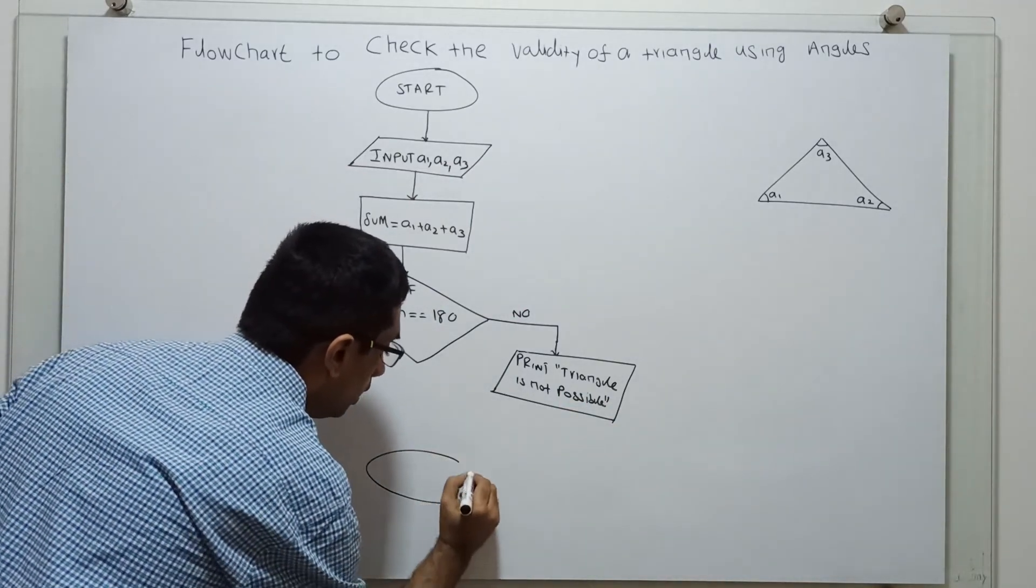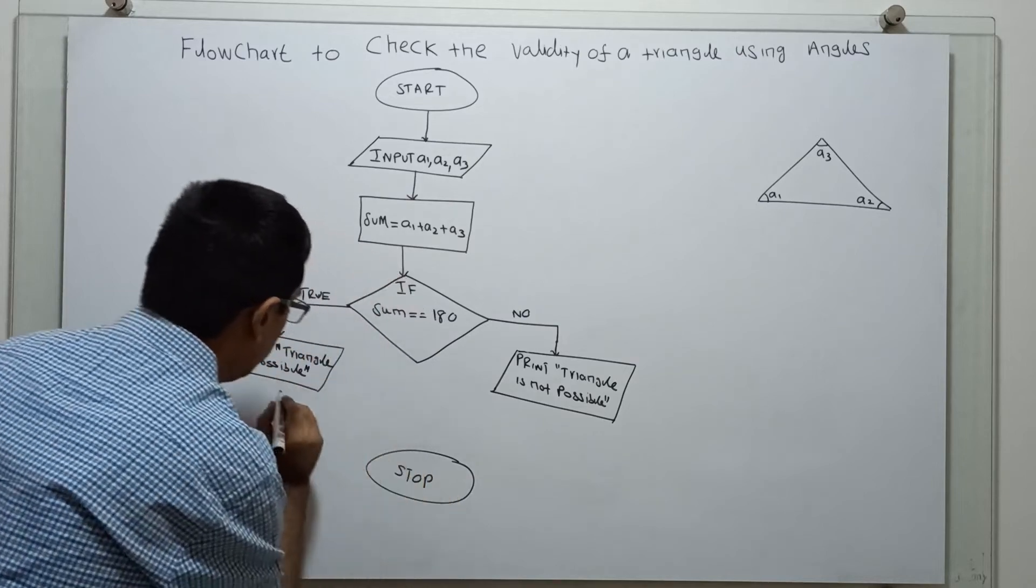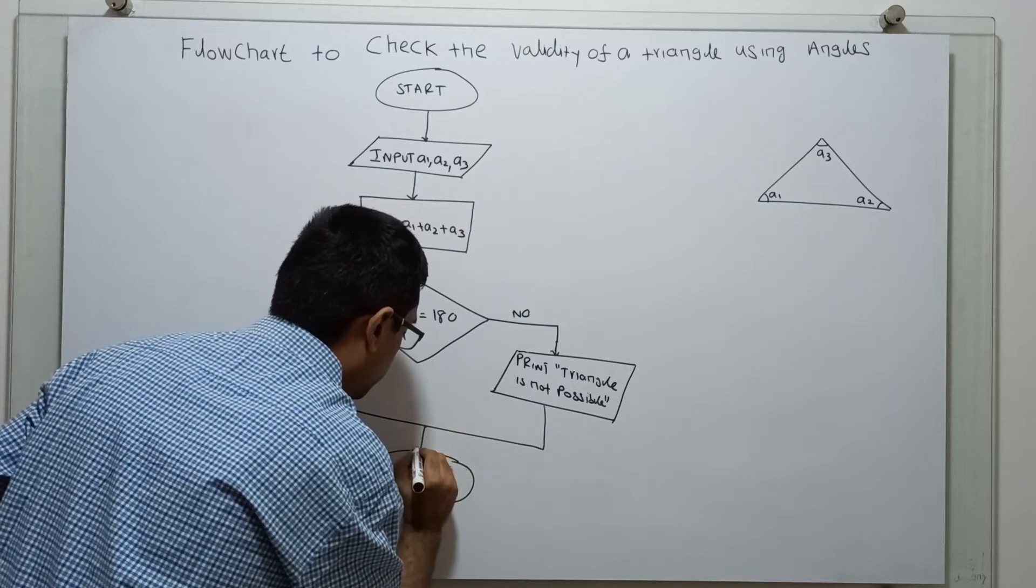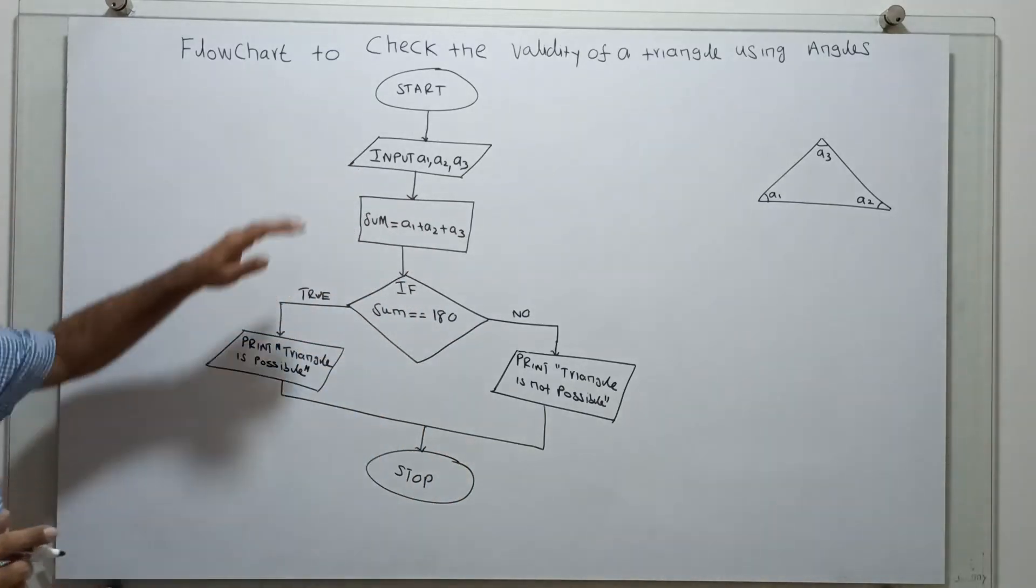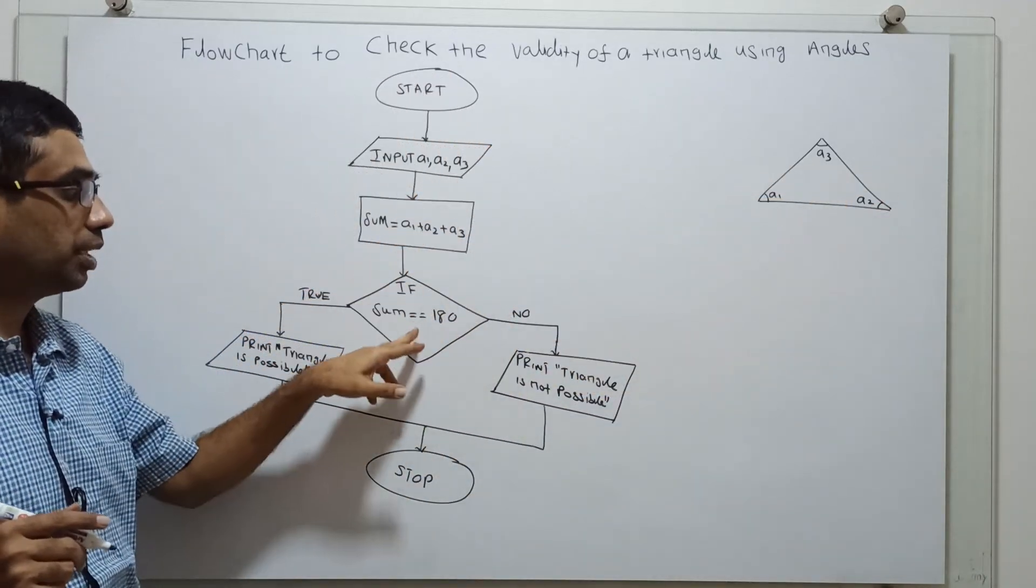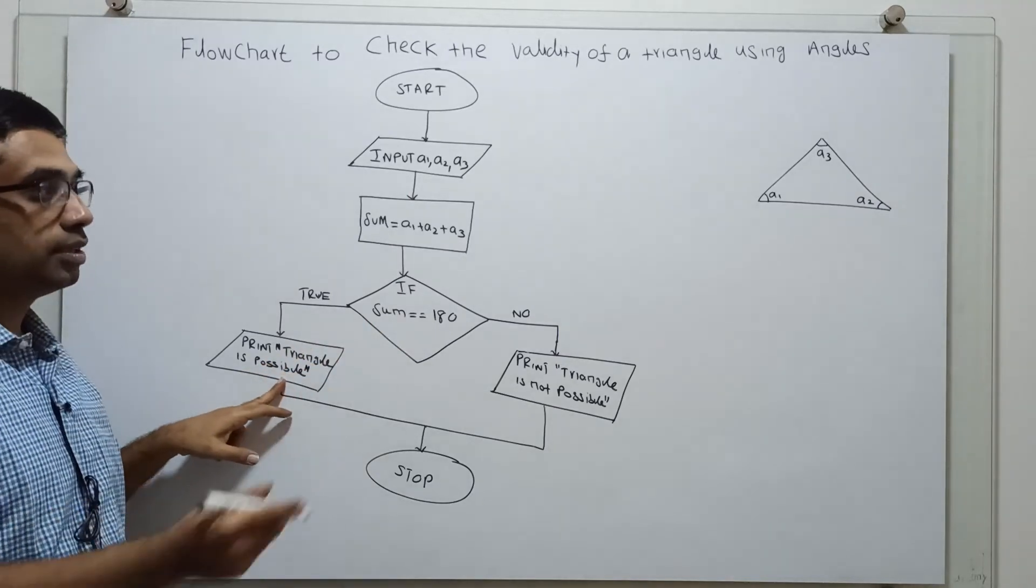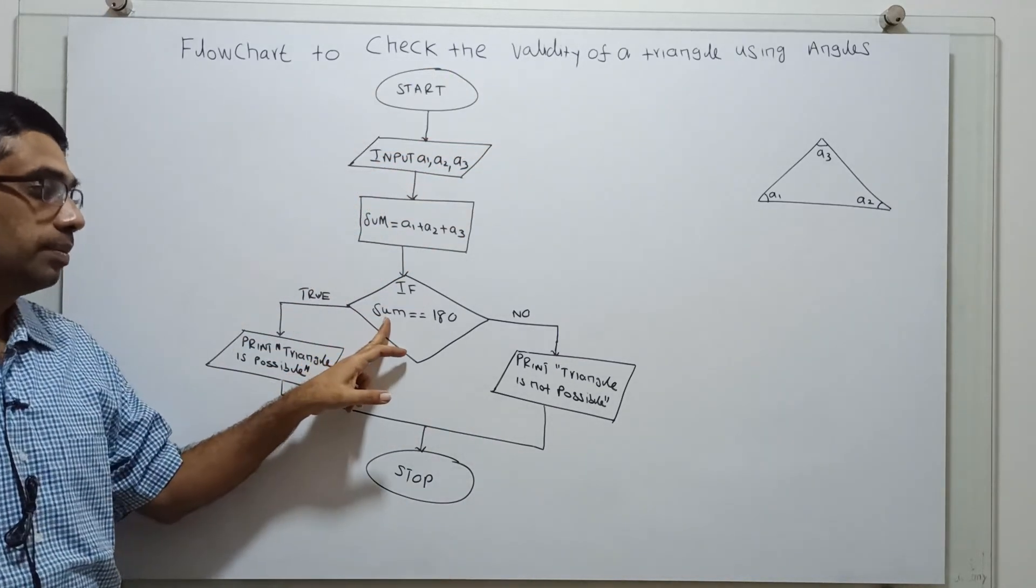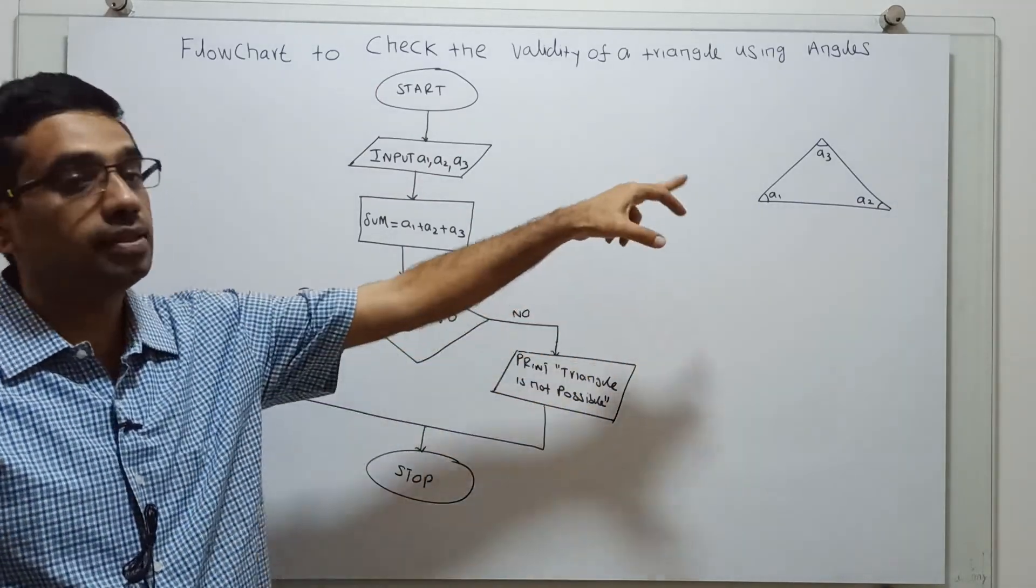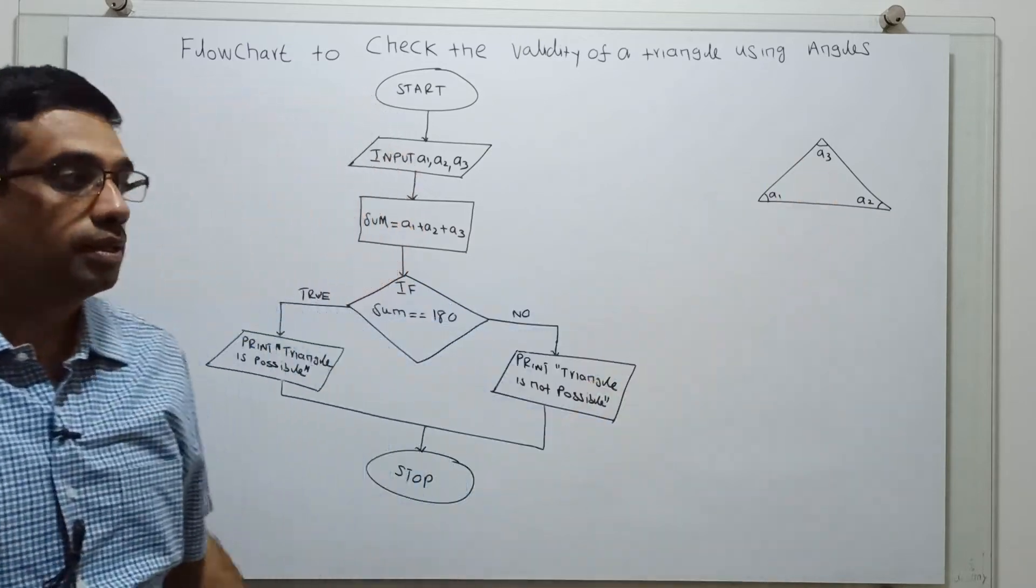So this is the logical end of the flowchart. Stop. That's it. I am obtaining the three angles, calculate the sum of the angles. I am checking sum equal to 180 degrees. Then I am printing triangle is possible. That means the three angles are valid. Sum not equal to 180 degrees means the triangle is not possible. The given three angles are not valid. So the given three angles won't form a triangle.